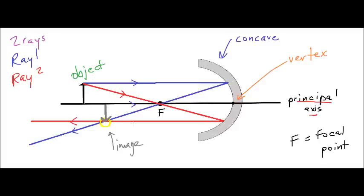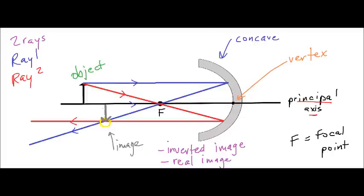A few things to note: when the object lies beyond the focal point, the image formed is inverted. Because the image appears on the same side as the object, it is referred to as a real image. If I placed a screen there, I'd be able to capture that image — similar to what you might see in a fun house with curved mirrors, where the image appears inverted.